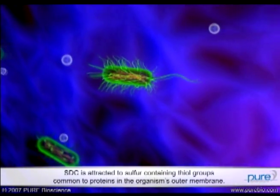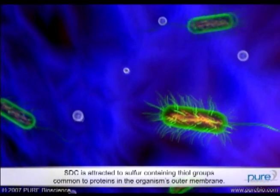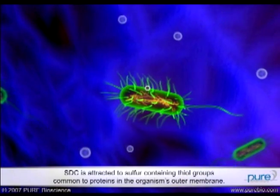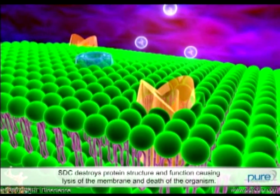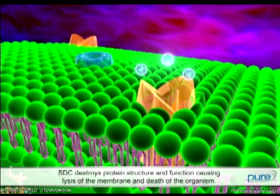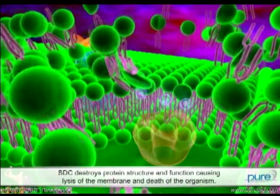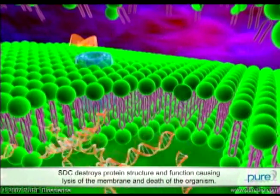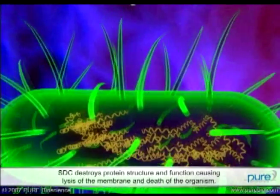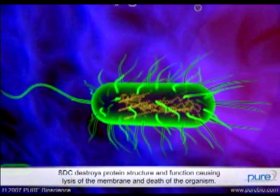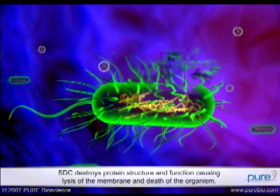Additionally, STC can act on an organism's outer membrane. Silver ions are highly attracted to sulfur-containing thiol groups found in metabolic and structural proteins bound to the membrane surface. STC targets these critical proteins and destroys their structure, disrupting membrane function and integrity, and the organism dies.